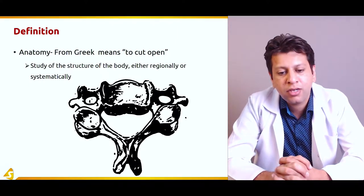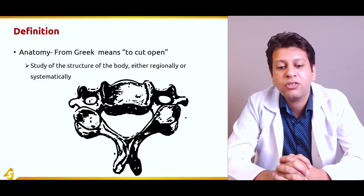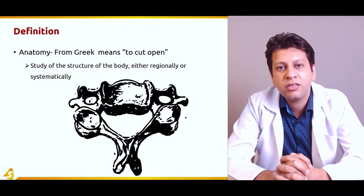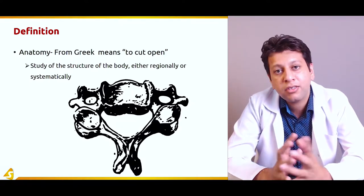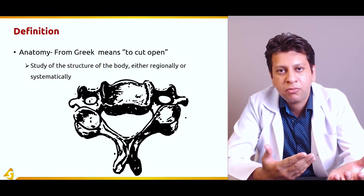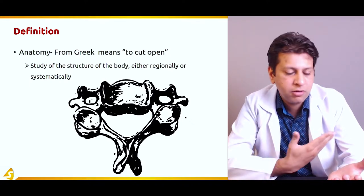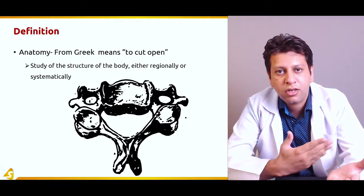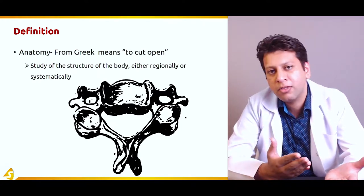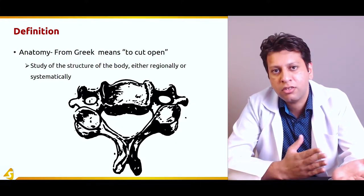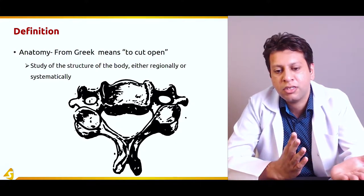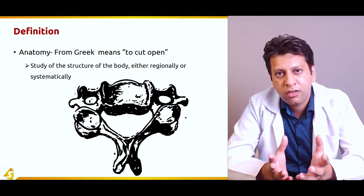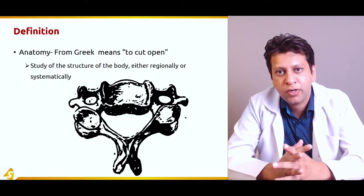Anatomy is a Greek word which means to cut open. It is the study of the structure of a body, either regionally or systematically. For example, if we are studying only the upper limb — its musculature, neurovascular structures, and bones — this is studying anatomy regionally. But if we are studying the musculature of the whole body, that is studying anatomy systematically.